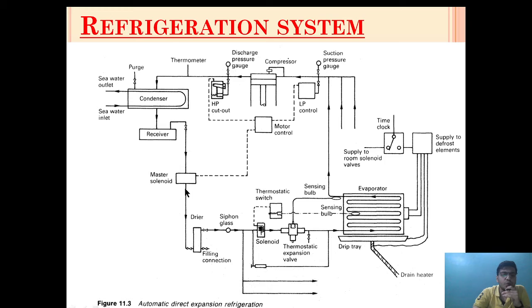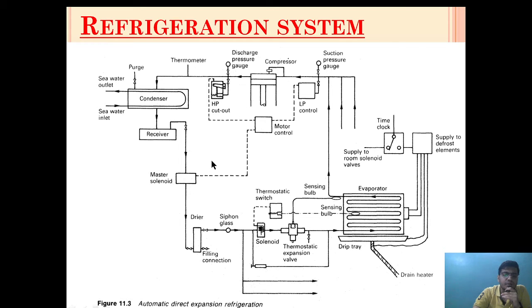A master solenoid is provided which will prevent the flow of refrigerant if any fault occurs in the compressor. The master solenoid valve gets its signal from a motor controller or a device which assesses the condition of the LP and HP. If there is any LP or HP cutout, it will prevent the starting of the master solenoid, and as the master solenoid closes, it will prevent the flow of refrigerant. After the condenser, the refrigerant will flow and pass through a dryer.